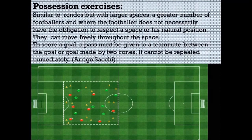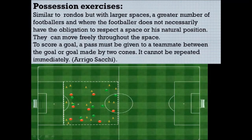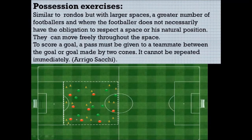Possession exercises are similar to rondos but in larger spaces with a greater number of footballers, where the footballer doesn't necessarily have to respect his natural position — they move freely throughout the space. To score a goal, a pass must be given to a teammate between a goal made by two cones, and it cannot be repeated immediately. This example was made famous by Arrigo Sacchi when he coached the Italian national team — they showed him training this way in video. It's an excellent exercise because we work many tactical aspects and also conditionally — aerobic capacity — though it's not positional. Players move freely throughout the whole space.